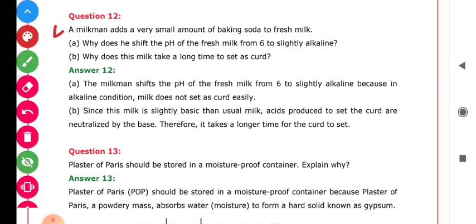Question number 12: A milkman adds a very small amount of baking soda to fresh milk. (a) Why does he shift the pH of the fresh milk from 6 to slightly alkaline? (b) Why does the milk take a long time to set as curd? First question ka answer: the milkman adds some baking soda to his milk. Why does he make the milk slightly alkaline with pH around 7.5?